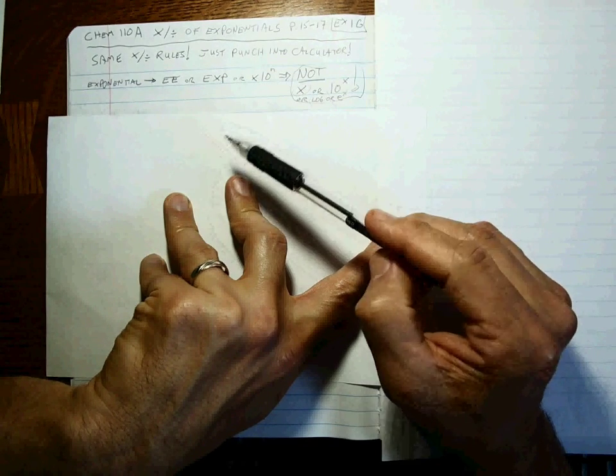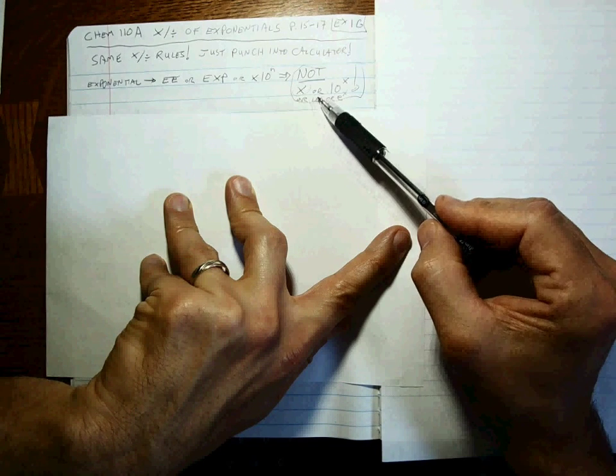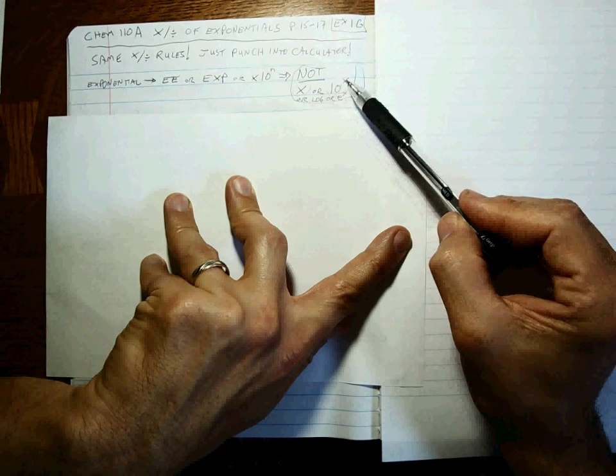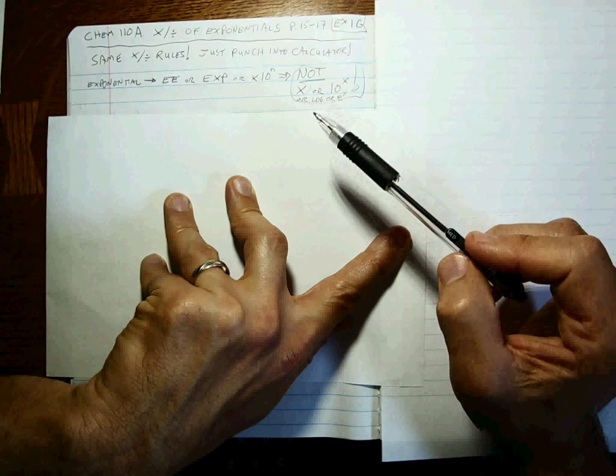But what it will not do is you're not going to hit the multiply button. You're not going to hit 10. You're not going to hit the 10 to the x button or the log button or the e to the x button. It's very easy.